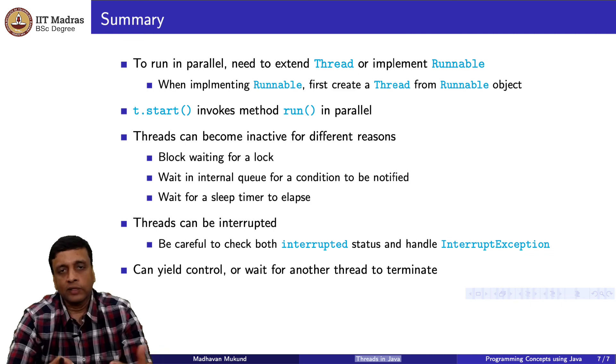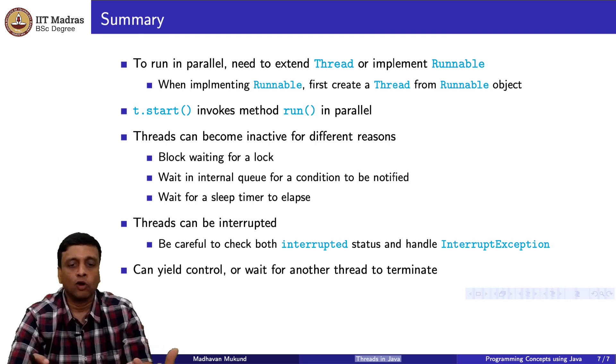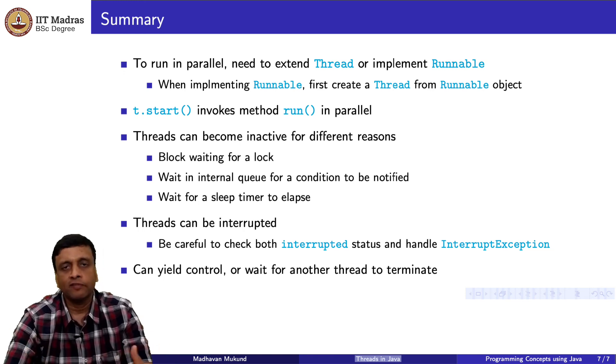A thread, once it starts, it is runnable. When you create it, it is new. When it starts, it is runnable. But every runnable thread might go through a situation where it cannot run because it is blocked for various reasons. Might be waiting for a lock. It might have suspended itself and it is waiting for a notification. Or it might be waiting for some time to elapse through a sleep.